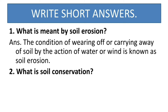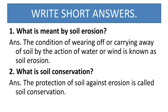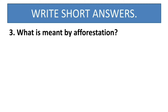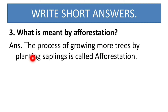What is soil conservation? The protection of soil against soil erosion is called soil conservation. We protect the soil by planting more and more trees. What is meant by afforestation? The process of growing more trees by planting saplings is called afforestation.